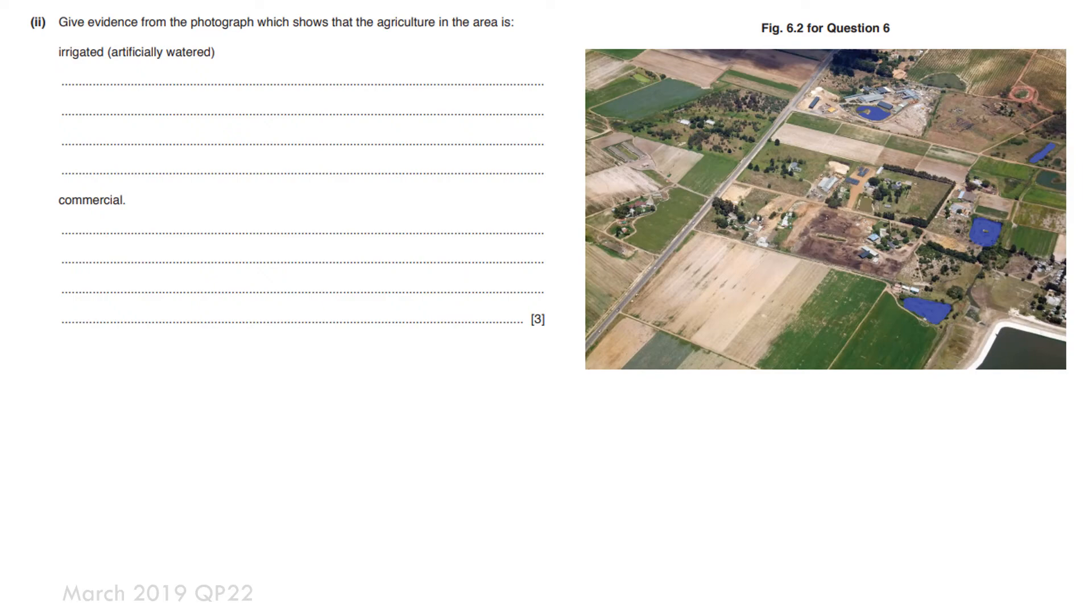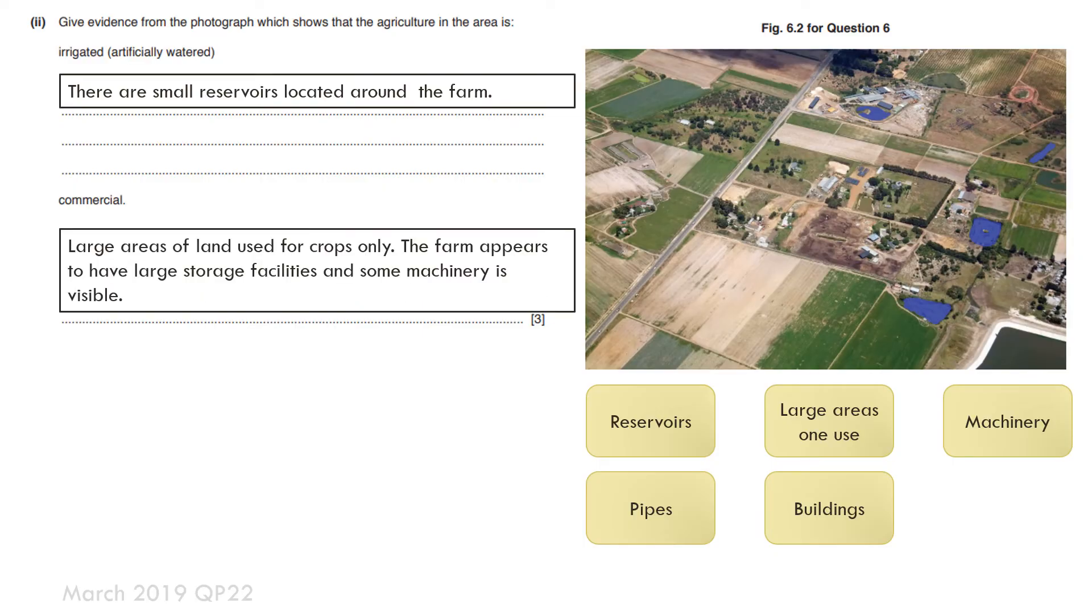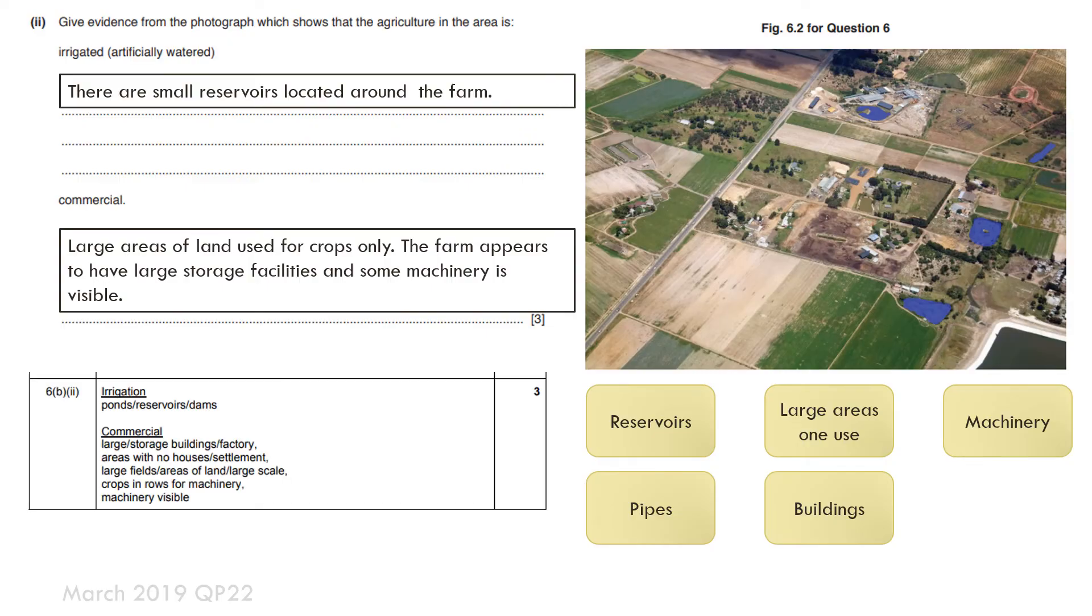The question asks me to give evidence from the photograph which shows that the agriculture in the area is irrigated or artificially watered and done for commercial use. If it's irrigated what evidence can I have? Certainly there are small reservoirs located around the farm and large areas land use for crops only. The farm appears to have large storage facilities and some machinery is visible. Remember it's commercial you want to grow lots of the same type of crop to sell for a profit. There's the mark scheme there for you.